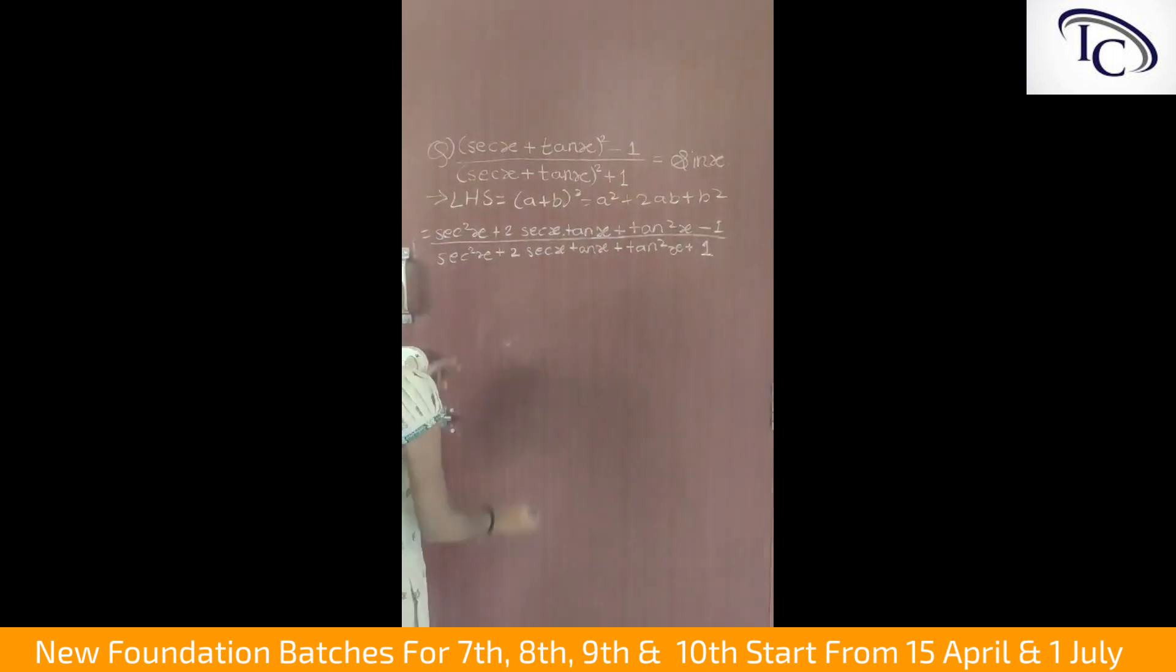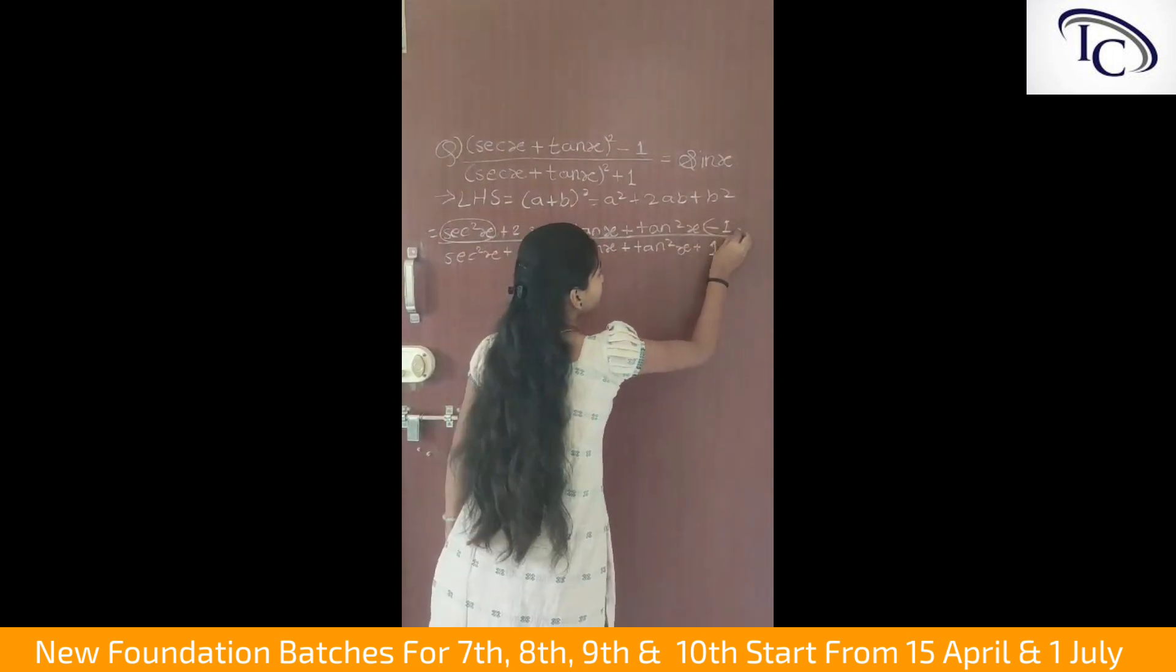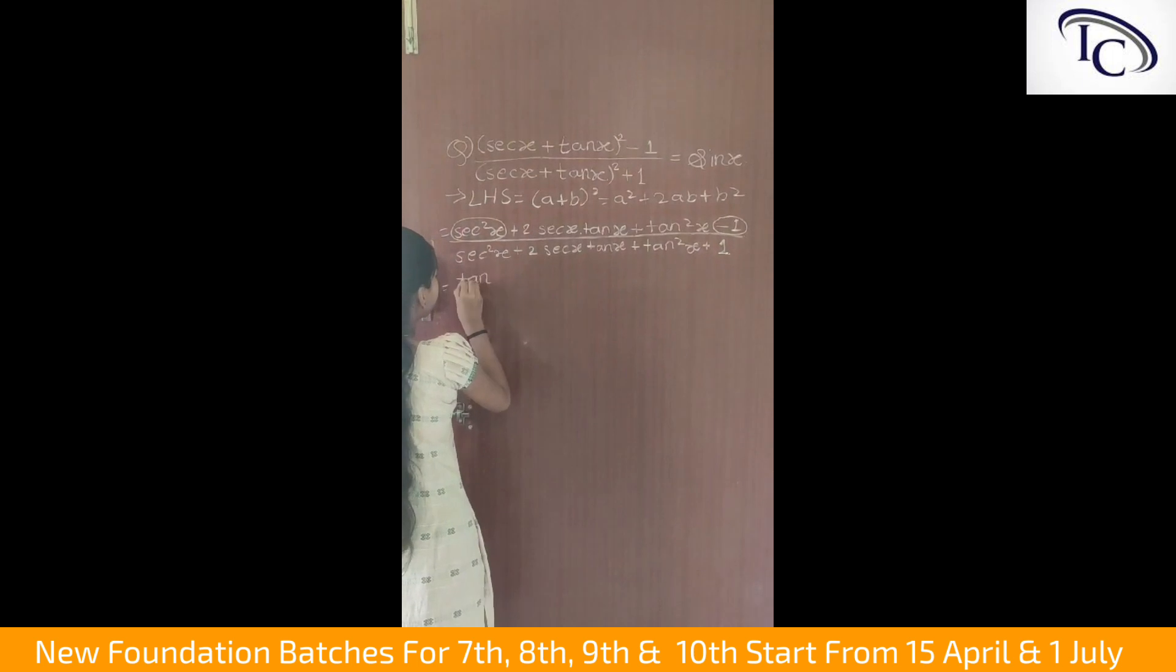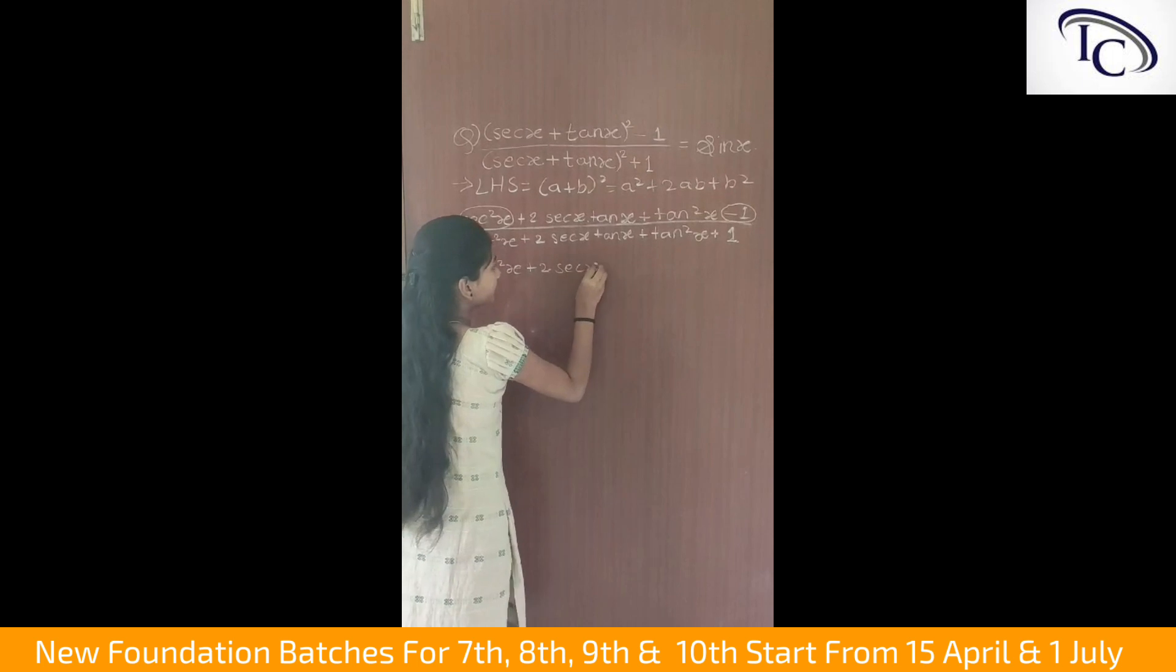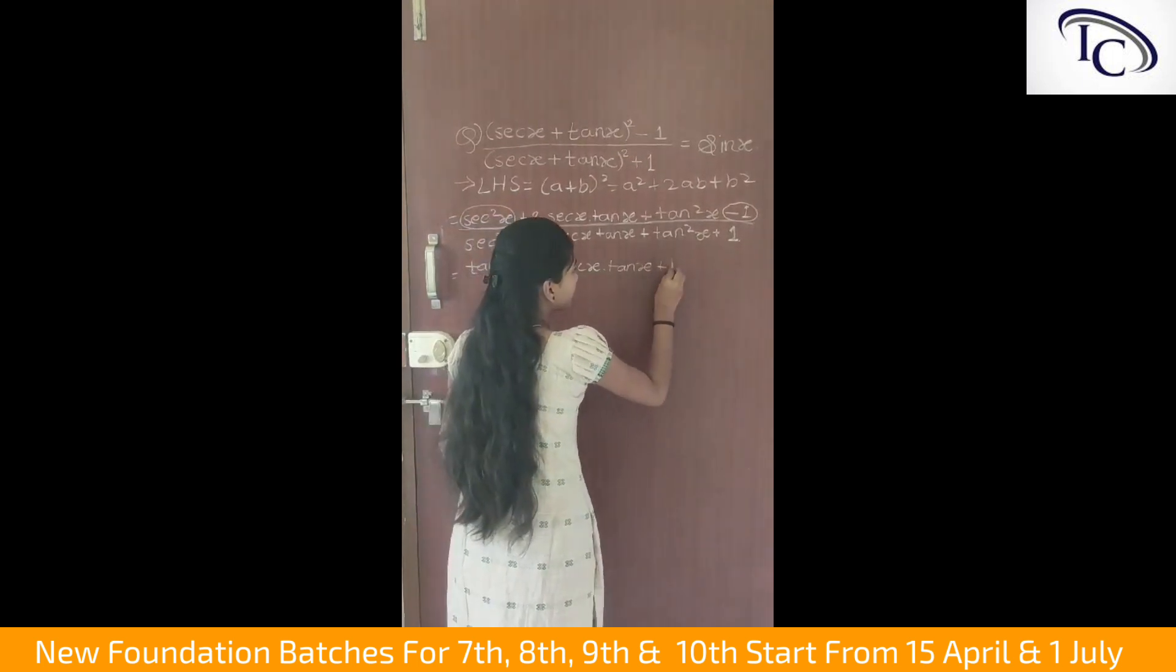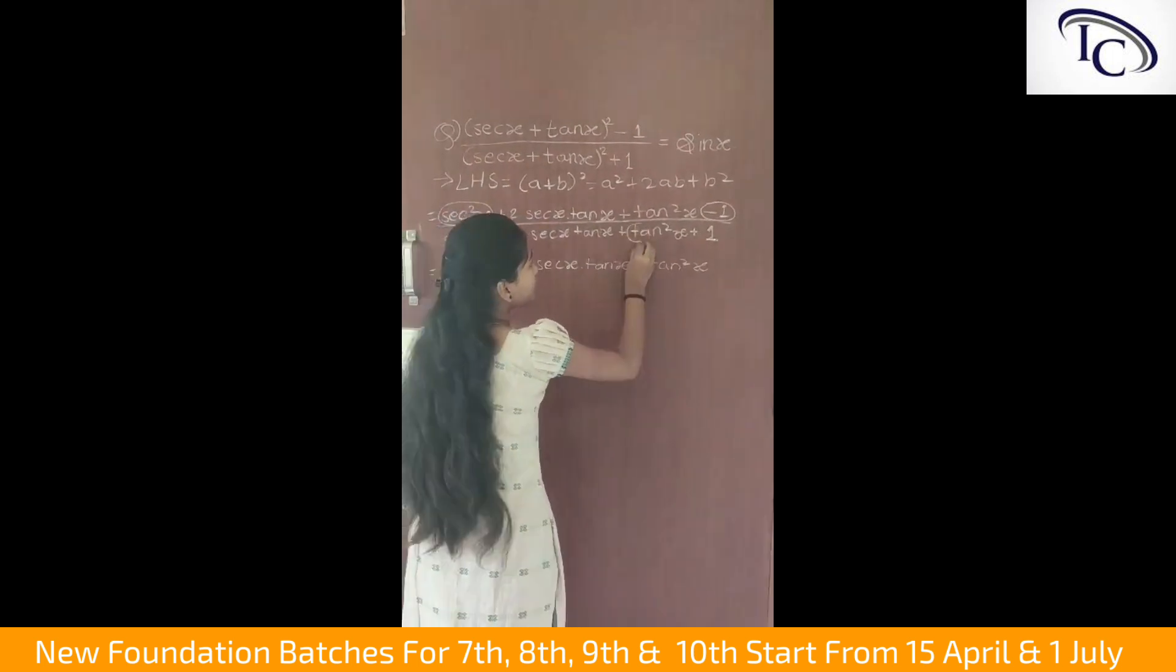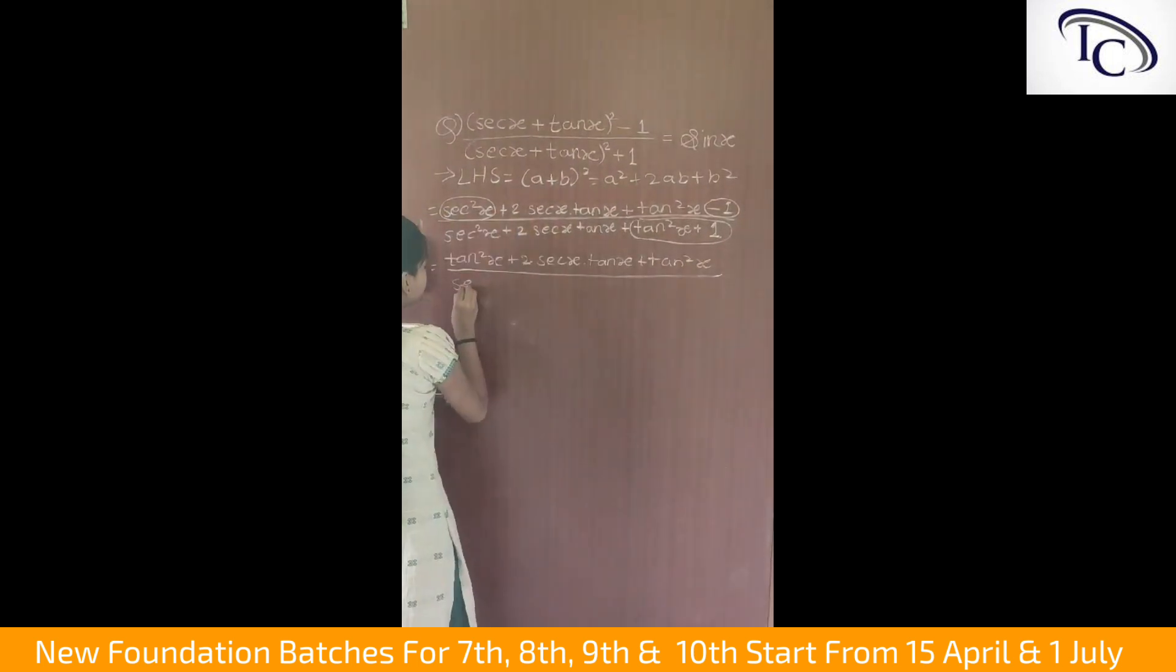Now here you can see sec square x minus 1 which is equal to tan square x, and tan square x plus 1 which is equal to sec square x.